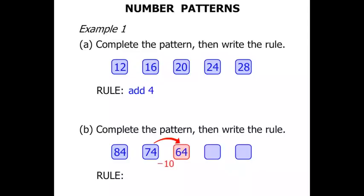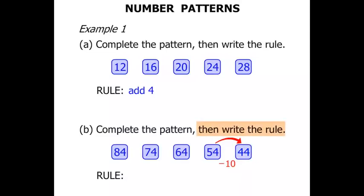So let's keep on subtracting 10. From 64, to get to the next number, we subtract 10, and 64 minus 10 is 54. From 54 we subtract 10, so we get 44. We need now to write the rule, which was to subtract 10. Fantastic!